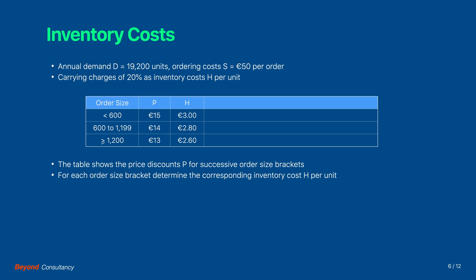We now determine the corresponding inventory cost H per unit. In the example, the inventory cost is 20% of the purchase price. It is calculated for each order size bracket as shown in the table.